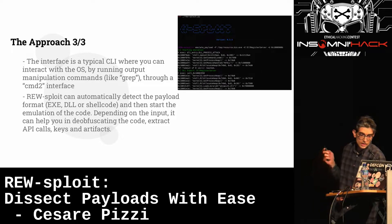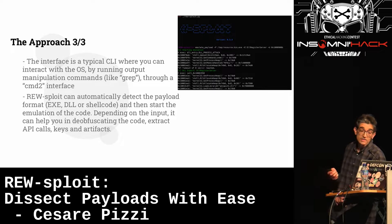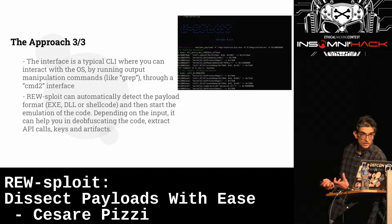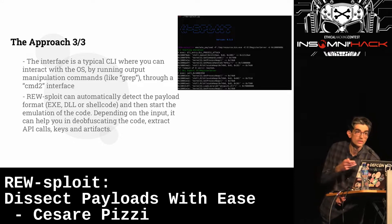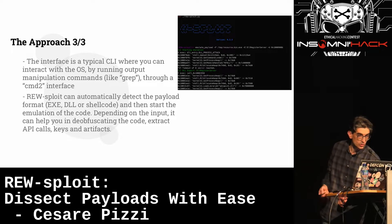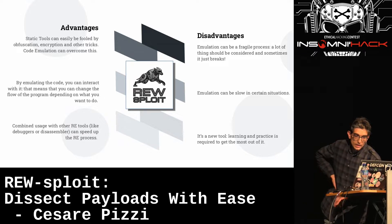RE-sploit can automatically detect the payload format — for example, whether it's a 64-bit or 32-bit DLL or shellcode — then start up the emulation. Depending on what it finds in the code, it can extract API calls, encryption keys, and artifacts based on what we'd expect from a Metasploit, Cobalt Strike, or other payload.